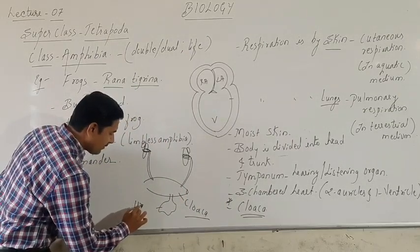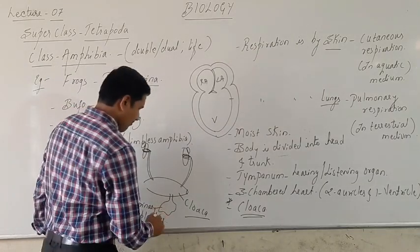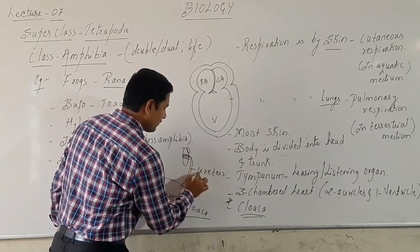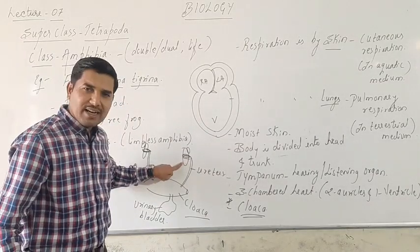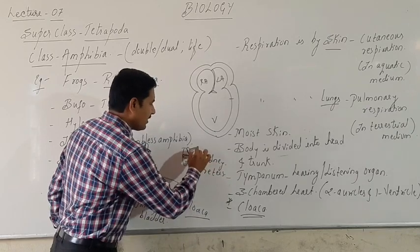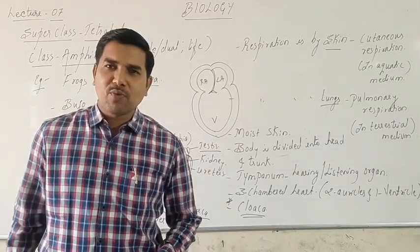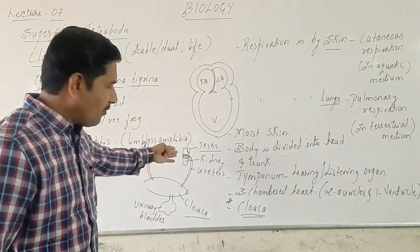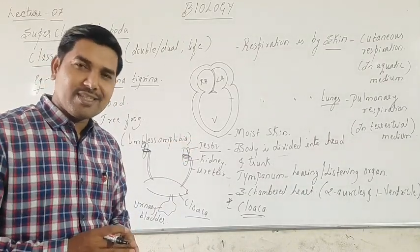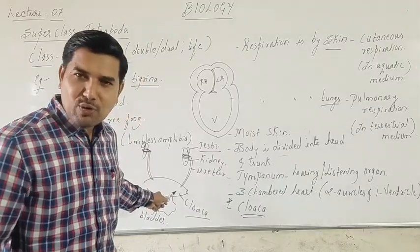In the frog, there is a urinary bladder, ureters, kidneys, and the testis — which is the male reproductive organ that produces sperm. Sperm will enter into the ureter and be released in the cloaca. From the kidney, urine is released, stored in the urinary bladder, and also released through the cloaca.